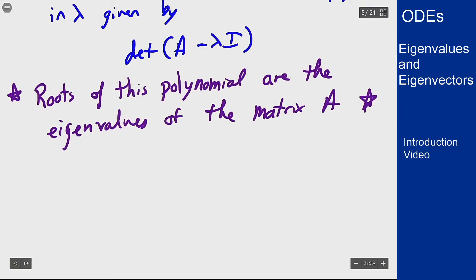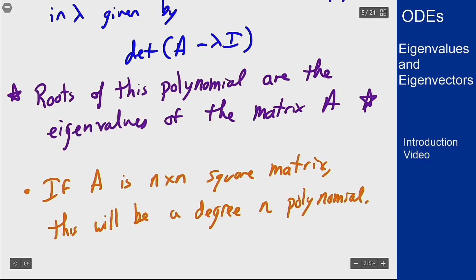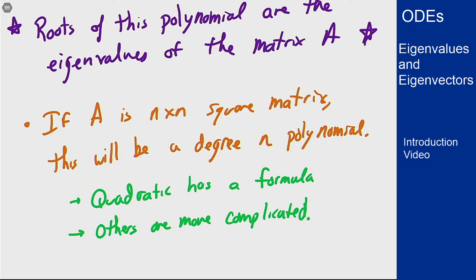Now a couple points on this: if A is an n by n matrix, this will always be an nth degree polynomial. So for 2 by 2 you get a quadratic which you always know how to solve. For 3 by 3 and up you'll get more complicated polynomials, but if you can find the roots those will give you the eigenvalues of this matrix. Again, we find these roots, we get eigenvalues, and that characterizes what the matrix is going to do.